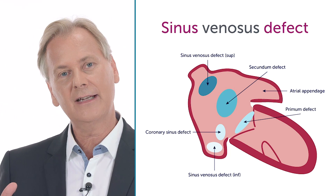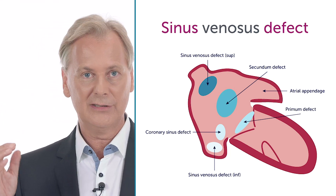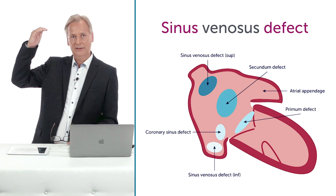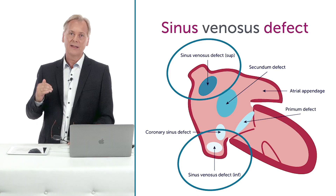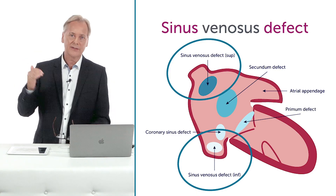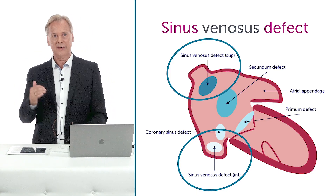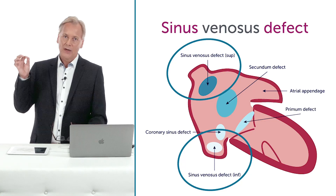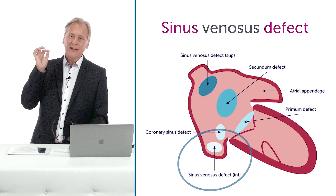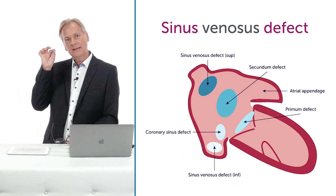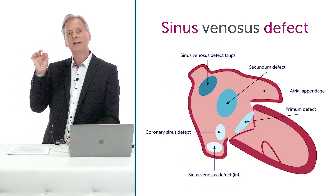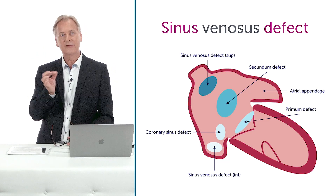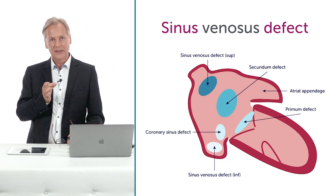The sinus venosus defect is a defect which is located either superior or inferior, with most of the sinus venosus defects located very cranial, where the defect is right at the junction of where the superior vena cava enters the right atrium.